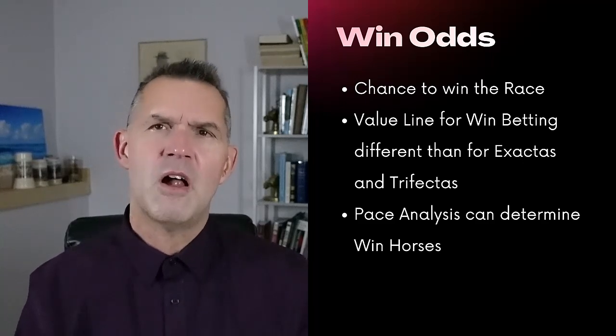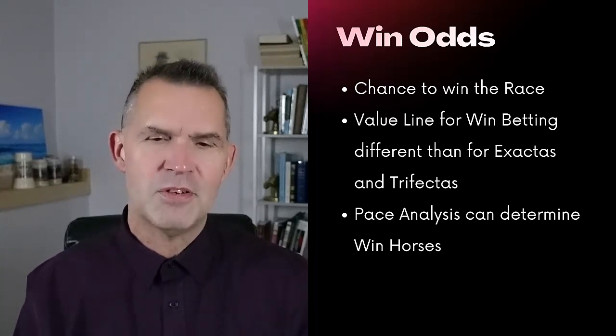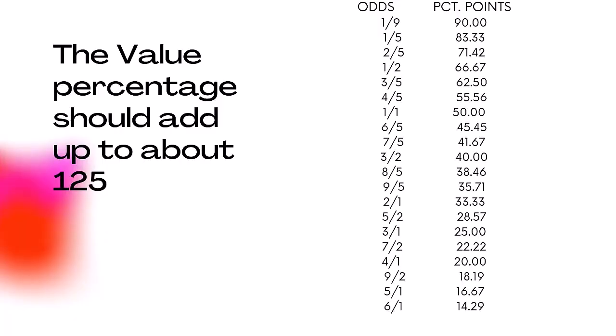What you're trying to get all these percentages to add up to when you do a percentage line is around 120 to 125. I try to aim for 125 because that allows for a little bit of air in your morning line. Nobody is consistently going to be able to create an accurate morning line, so a little more air room allows you to be slightly off over the long haul and still demand better value.